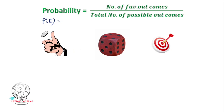In this random experiment, the results will be head or tail. This is a dice throw. The numbers are 1 to 6. So 1, 2, 3, 4, 5, 6.